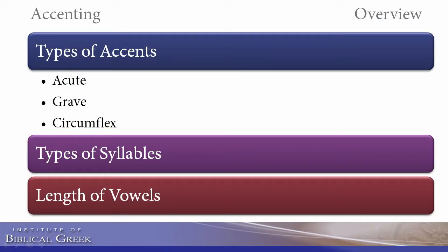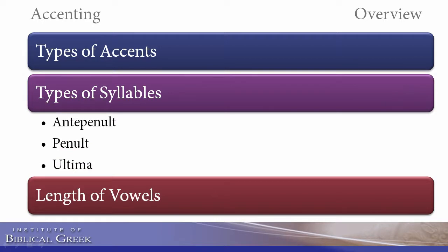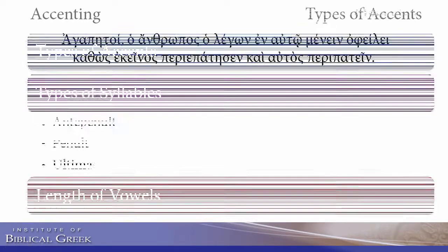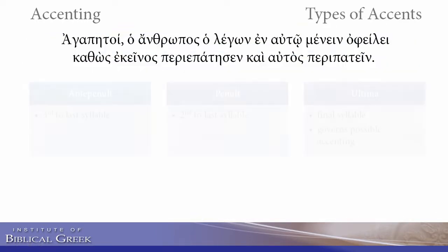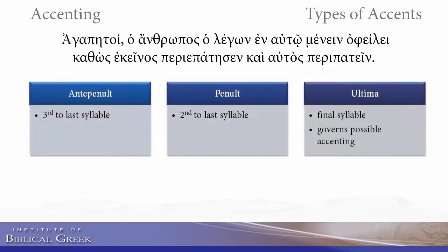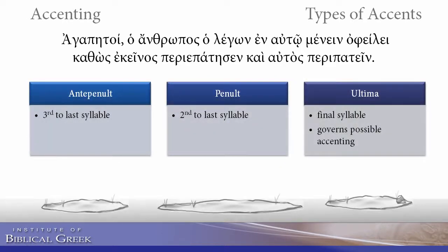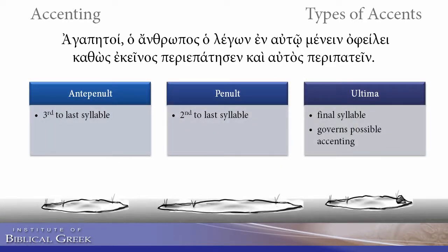As a quick review, I assume that you already know the three kinds of accents: the acute, the grave, and the circumflex. There are three syllables that we can accent: the antepenult, the penult, and the ultima, and the various lengths of vowels. Now, I want to quickly review the antepenult, penult, and ultima — especially the ultima, which governs the possible accenting.